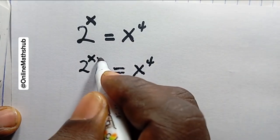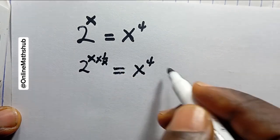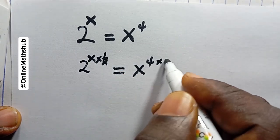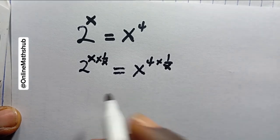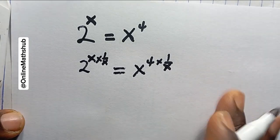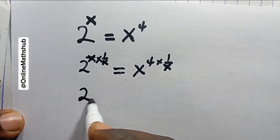I can actually multiply this side by power 1 over x, and then I also do the same here, 1 over x. If I evaluate this, it's actually going to cancel this, and then I'm left with 2 to the 1 over 1.